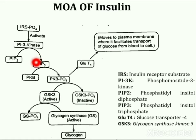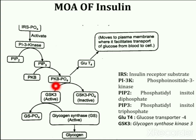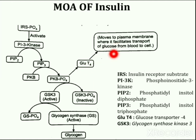IRS activates phosphoinositide 3-kinase, which converts phosphatidylinositol diphosphate to phosphatidylinositol triphosphate, which indirectly activates protein kinase B, which is PKB. This activated phosphorylated protein kinase B triggers the movement of glucose transporter GLUT4 from internal vesicles to plasma membranes, which stimulates glucose uptake from blood.